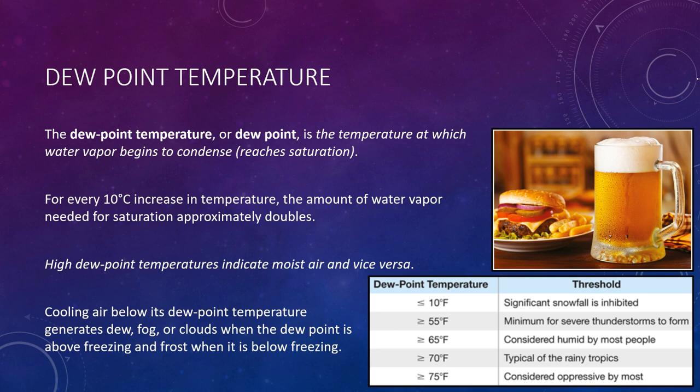Because the dew point temperature is a good measure of the amount of water vapor in the air, it commonly appears on weather maps. When the dew point exceeds 65 degrees Fahrenheit or 18 degrees Celsius, most people will consider the air to feel humid. Air with a dew point of 75 degrees or higher is considered oppressive.